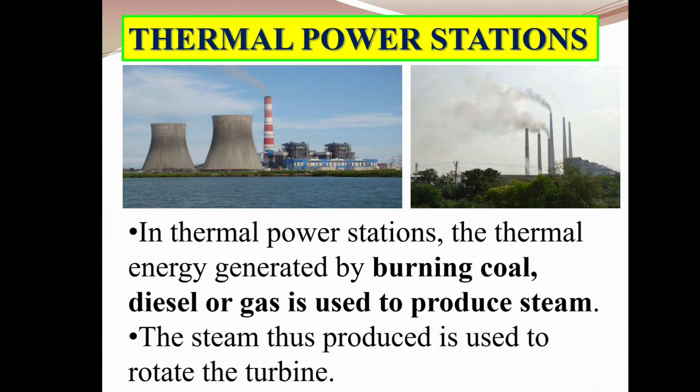Thermal power stations: In thermal power stations, thermal energy is generated by burning coal, diesel or gas to produce steam. The steam thus produced is used to rotate the turbine. A turbine is a machine for producing continuous power in which a wheel or blade is made to revolve by a fast-moving flow of water, steam, gas, air or other fluid. The steam produced from burning coal, diesel or gas is used to rotate this turbine.